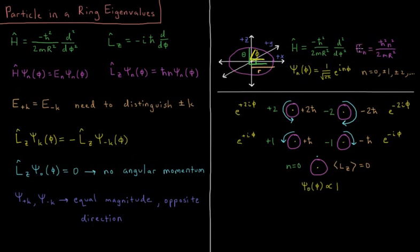The energies of that system was equal to h-bar squared n squared over 2mr squared, and our wave functions, depending on some quantum number n, were psi n of phi equals 1 over square root of 2 pi, our normalization constant, times the complex exponential e to the i n phi.